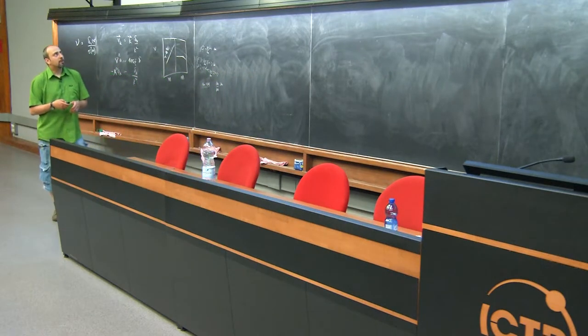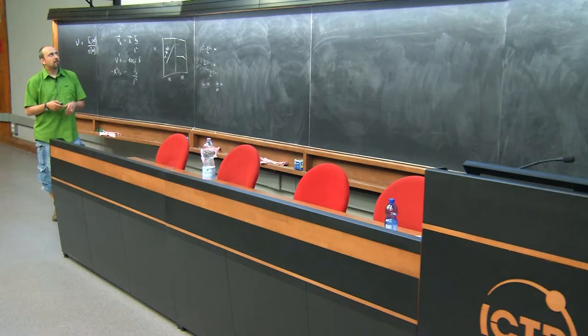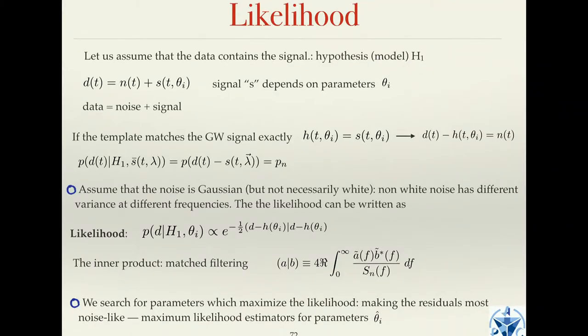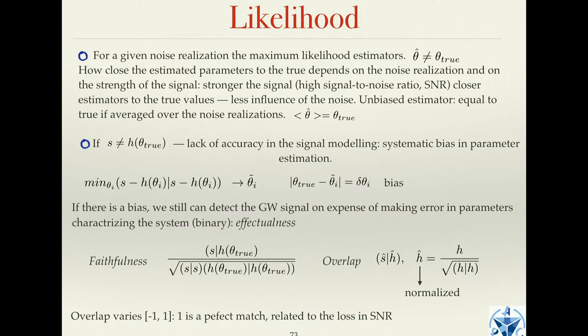To estimate the parameters, one way is to minimize the likelihood. You vary the parameters of your template, subtract it from the data, and see which parameters maximize the likelihood. This frequentist approach gives us the maximum likelihood estimator.